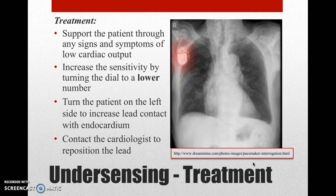The treatment for undersensing includes supporting the patient through any signs and symptoms of low cardiac output. Increase the sensitivity by turning the dial to a lower number — 0.5 is much more sensitive than 20. Turn the patient on the left side to increase lead contact with the endocardium. Contact the cardiologist to reposition the lead.